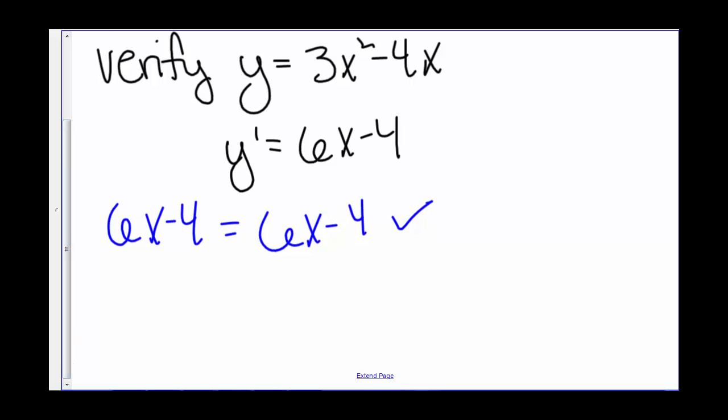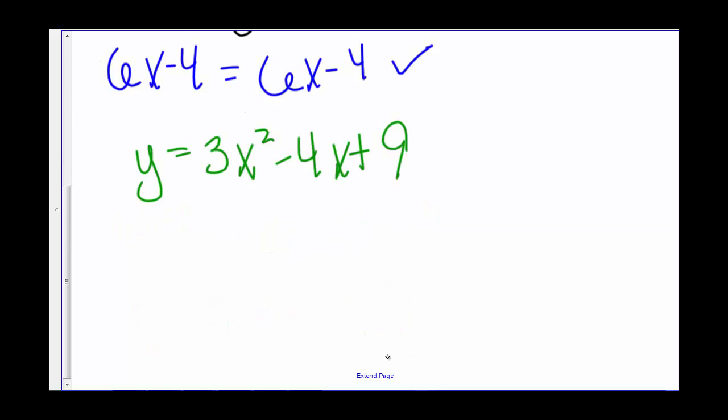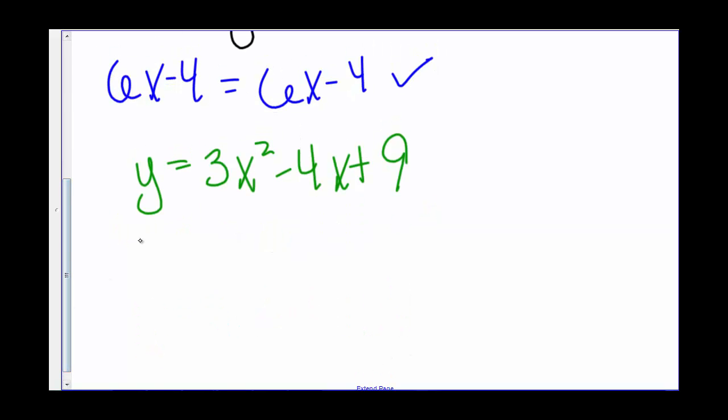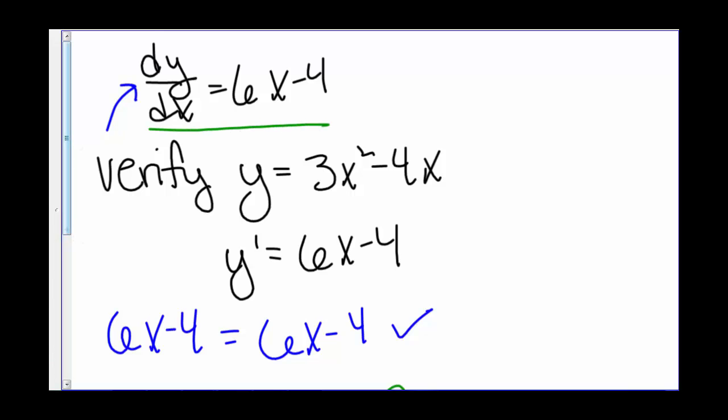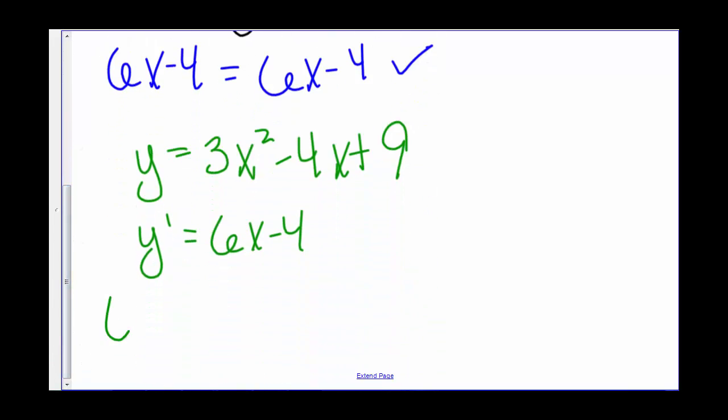Another solution is y = 3x² - 4x + 9. So let's go ahead and verify this as a solution. So y' = 6x - 4. So plugging into our original differential equation, we have 6x - 4 equals 6x - 4. So yes, we have another solution.